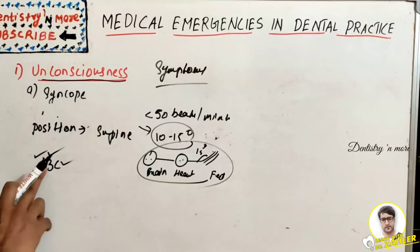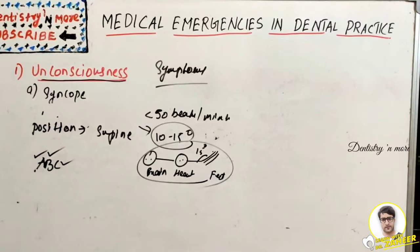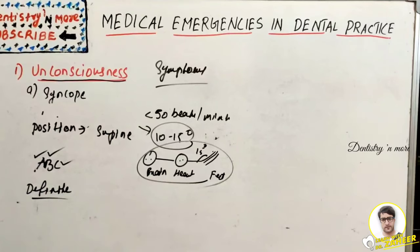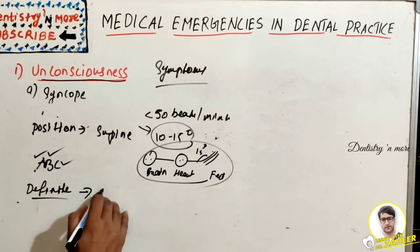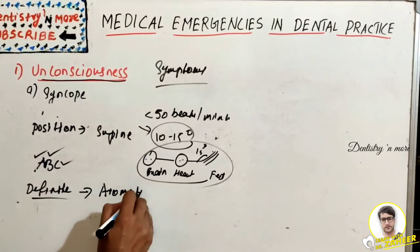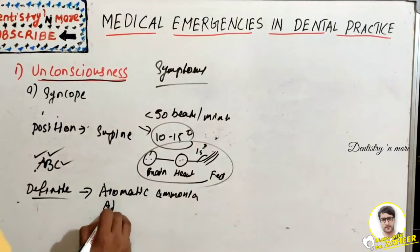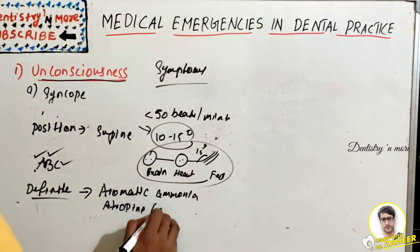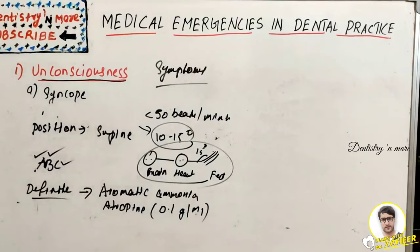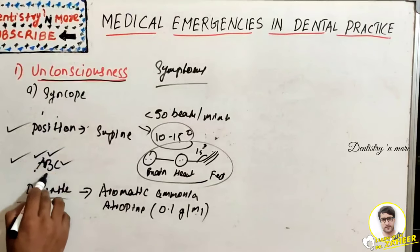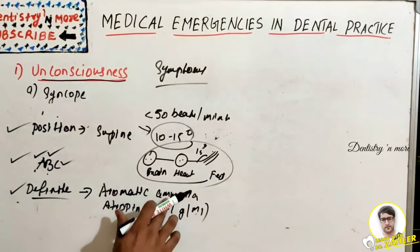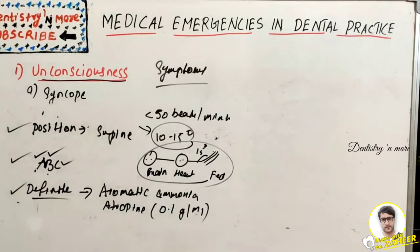After checking airway, breathing, and circulation, proceed to definitive management. First, monitor the vital signs. Then administer aromatic ammonia, which is a respiratory irritant that can bring back the patient's consciousness. Alternatively, administer atropine at 0.1 gram per ml. So the definitive management of syncope is: positioning, then ABC, then aromatic ammonia or atropine.